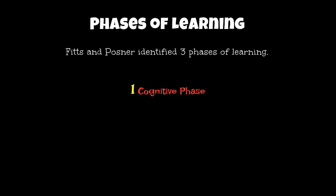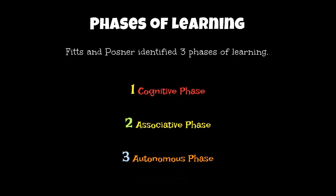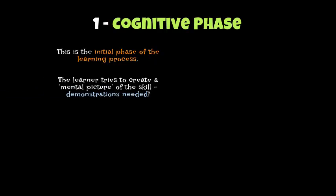The first phase is what we call the Cognitive Phase, the second is what we call the Associative Phase, and the third is called the Autonomous Phase. The Cognitive Phase of Learning is the first step of the learning process. When you're a beginner first learning a skill, you are in the cognitive phase, because you know nothing about it, or very little about it, and you're trying that skill for the first time. At this point, demonstrations and clear verbal instructions are needed.